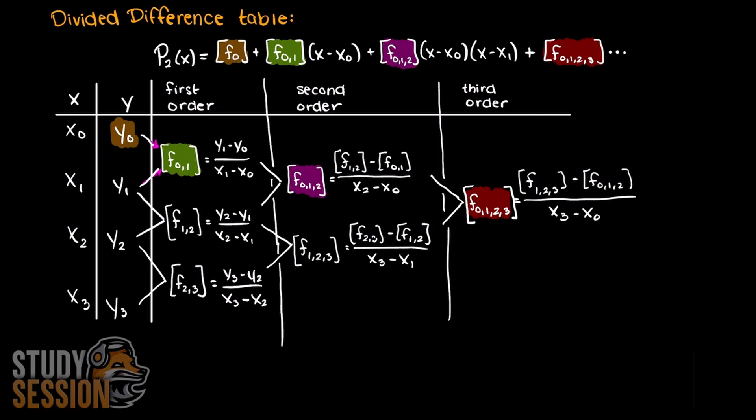As you can see, our new middle value is just continually taking the divided difference of the two lower orders that construct it. Through this table we can easily find our necessary coefficients for our Newton's polynomial, as the top row is all of the divided difference coefficients necessary to find your interpolating polynomial. In the coming videos I will complete examples walking through several divided difference problems, so stay tuned.